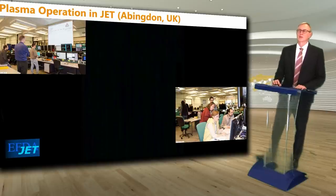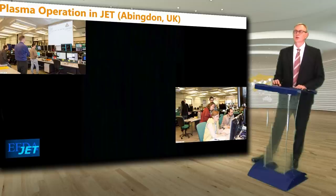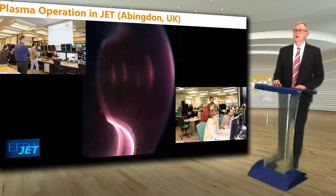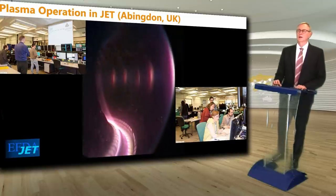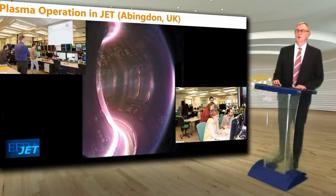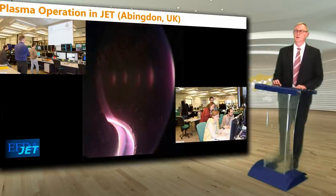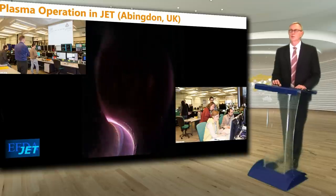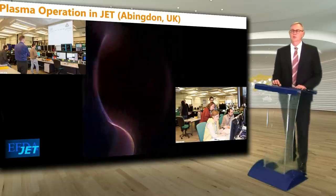This shows plasma operation on the JET tokamak in Abingdon, UK, with two views inside the control room. In this video you can also hear from a magnetic pickup coil located inside the vacuum vessel changes in the magnetic field — so you can actually hear the plasma in progress. Visible light radiates mainly from the colder edge regions of the plasma.